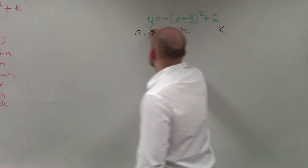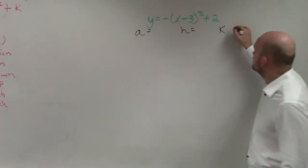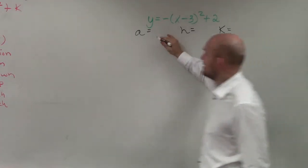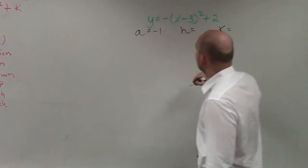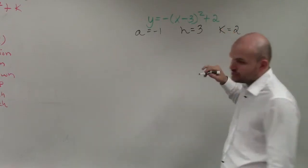And if you guys remember for standard form, Kelsey, that's exactly what we did, but we did that for a, b, and c, right? So in this case, I'm going to identify my a as negative 1, my h as 3, and my k as 2.